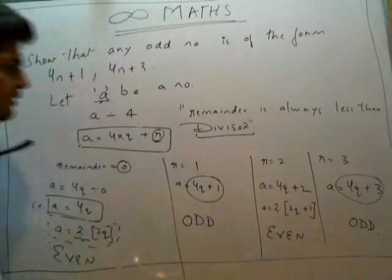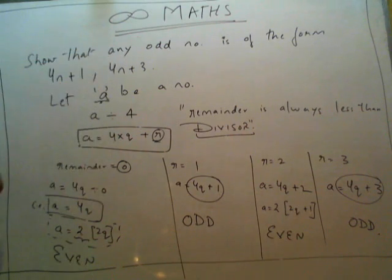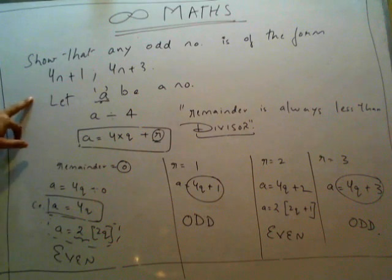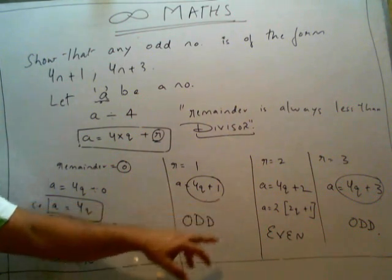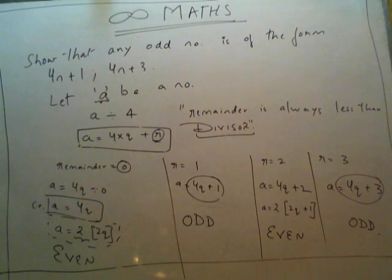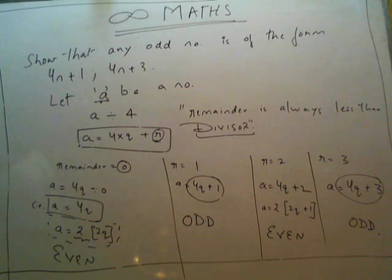So this is the solution for the question: show that any odd number is of the form 4N+1 or 4N+3. We have seen that 4Q+1 and 4Q+3 are those forms. I hope I am clear with my concept. We will look forward to many more videos like this. Take care, bye-bye.